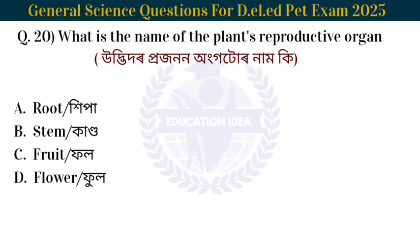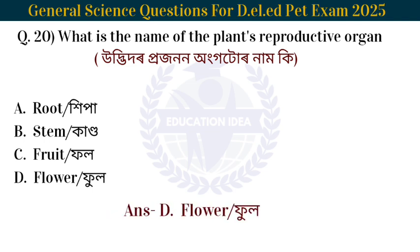Next question: What is the name of the plant's reproductive organ? The plant's reproductive organ is called a flower.